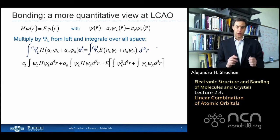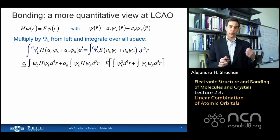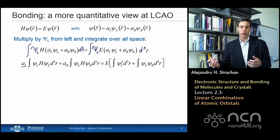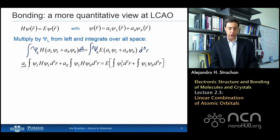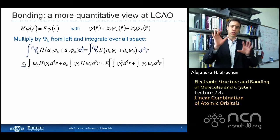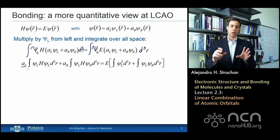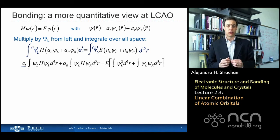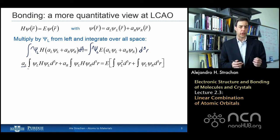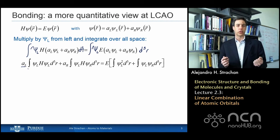If you rearrange the terms a little bit, the linear coefficients a_left and a_right come out of the integral. I'm left with a few integrals that involve the wave functions and the Hamiltonian. These are things that I know — I can either solve these integrals analytically in some cases or using a computer, but the bottom line is all of these integrals are known numbers.